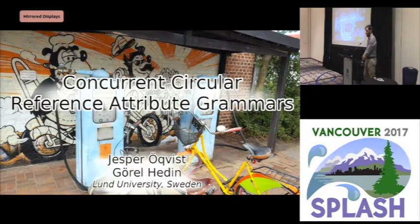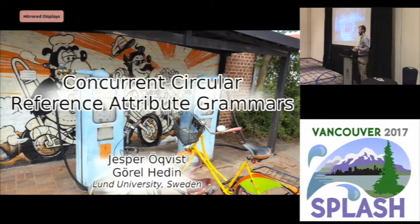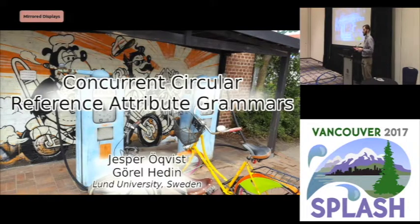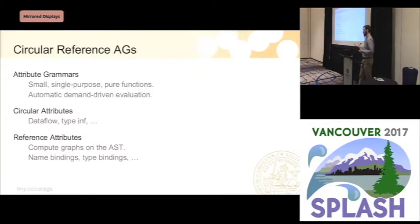I'm Jesper Akvist from Lund University, Sweden. I'm a PhD student and I've been working with implementing concurrent evaluation for reference attribute grammars. The title is pretty long, and that's because the interesting part of this project was to support circular attributes. I want to give a short introduction to circular reference attributes before we get into the concurrency.